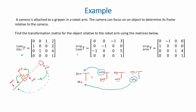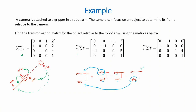Now let's look at the three individual transformation matrices. The matrix of the object relative to the camera is already given in the question, and so is the camera relative to the gripper. However, the first transformation matrix needed is the gripper relative to the arm, but the question only gives us the arm relative to the gripper. So to calculate this, we take the inverse of that given matrix.